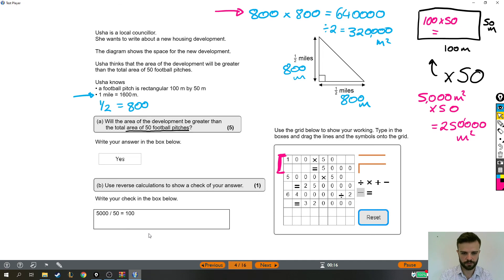Or did I get those back to front? No I didn't. Yeah, the development is bigger—320,000, and the football pitches are only 250,000. Right, that's enough. I feel like I've spent a long time talking through that one, but it was quite a long question so that's how it goes. I hope that helped, thank you very much, on to the next one.